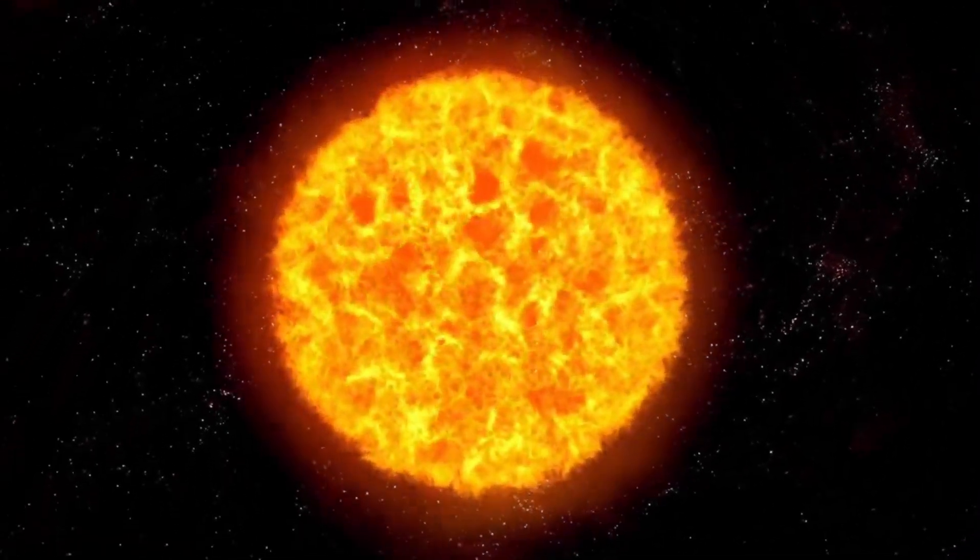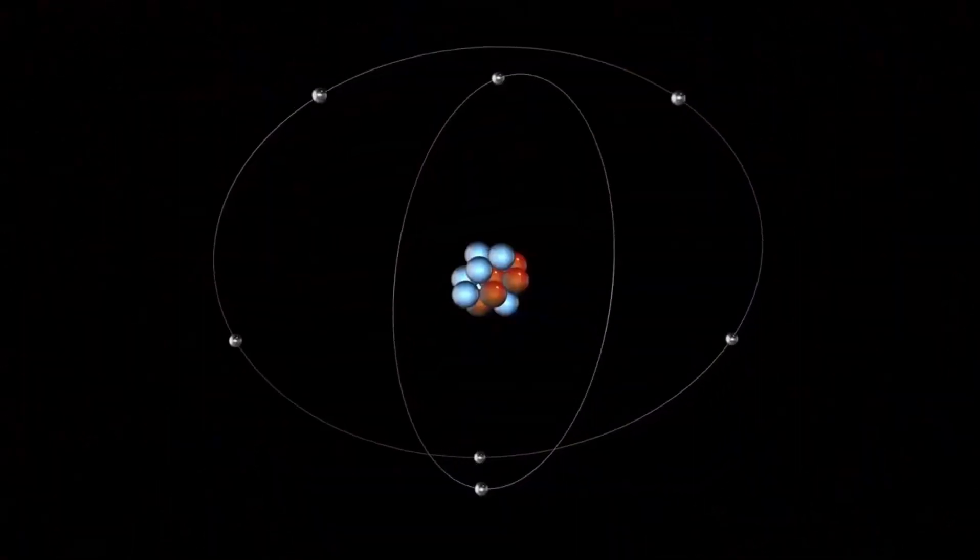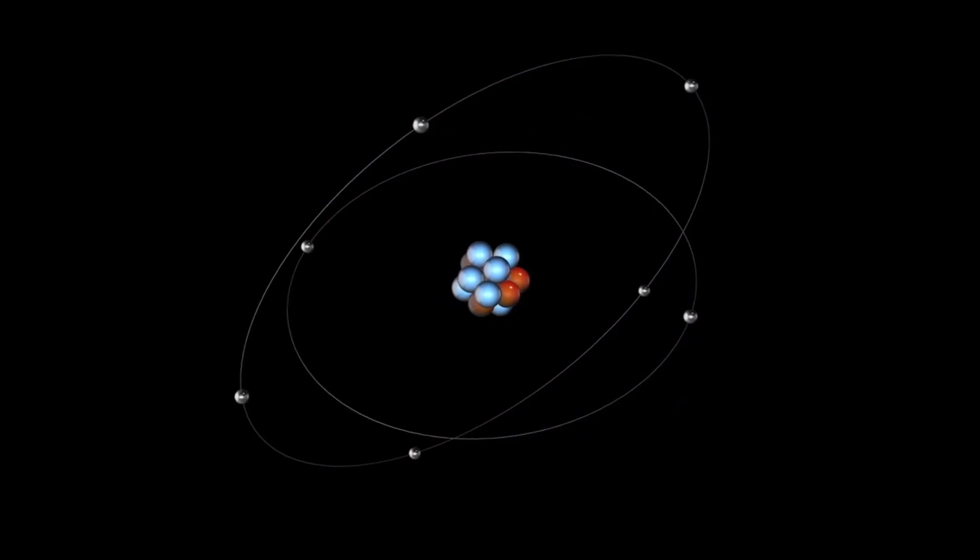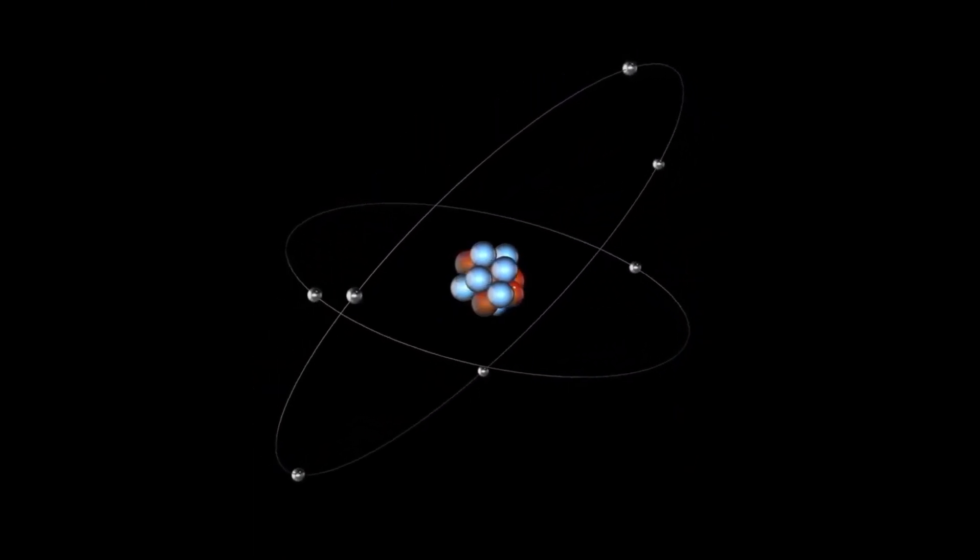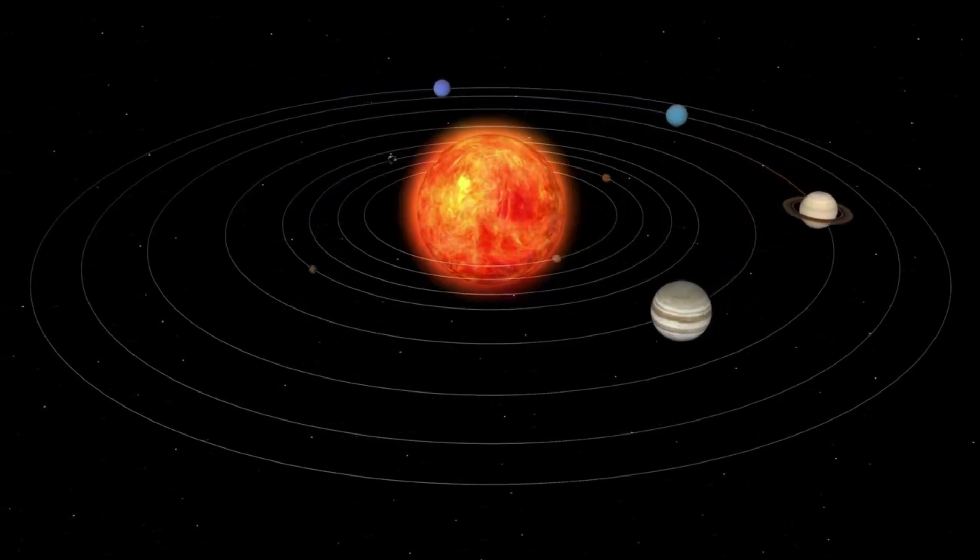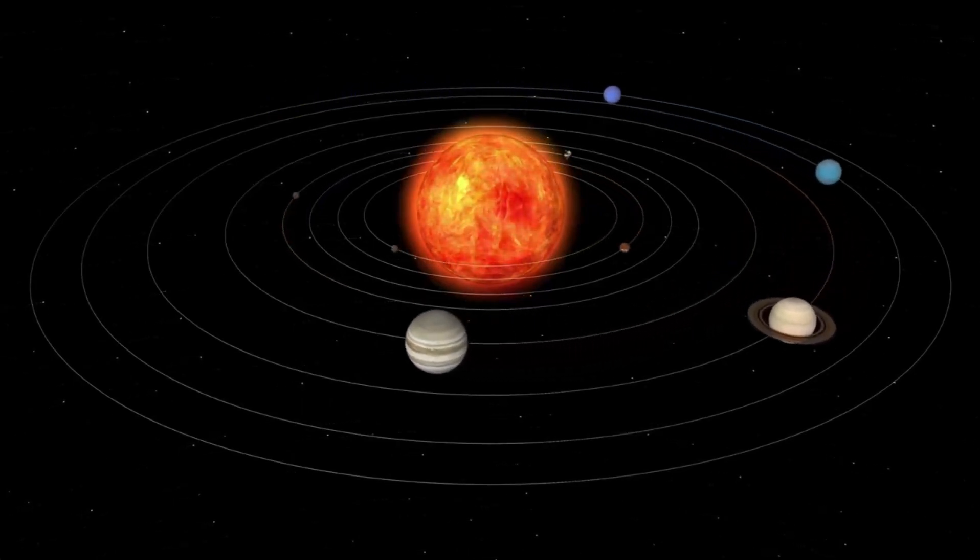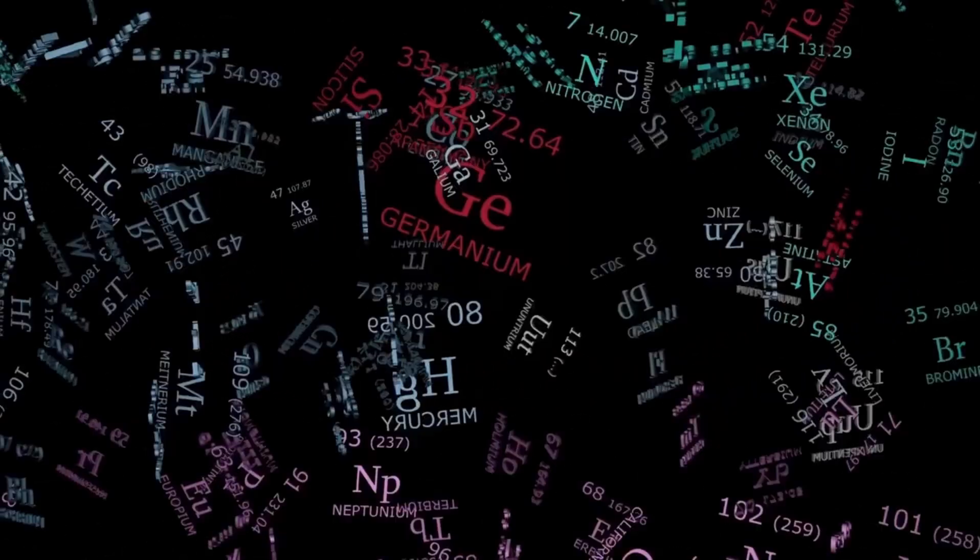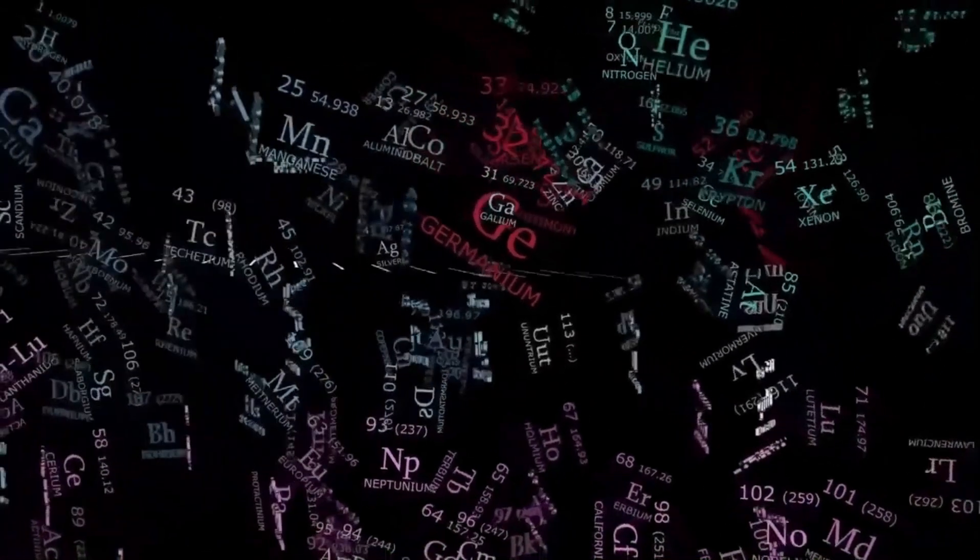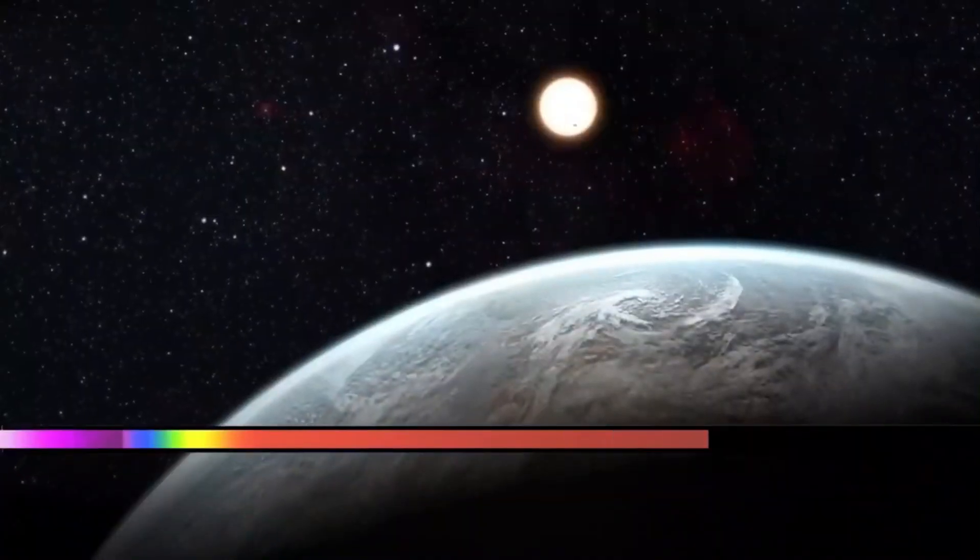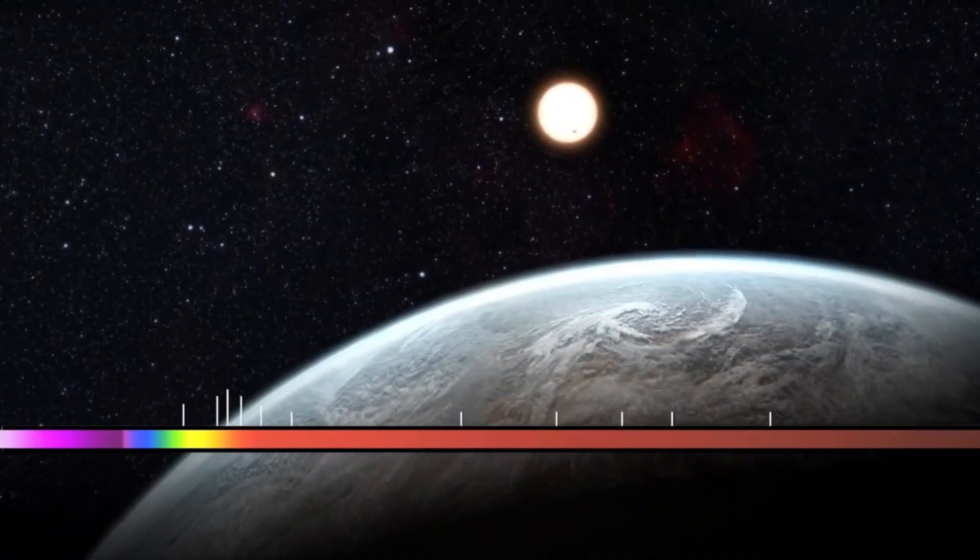Exobiology, the study of life beyond Earth, needs to shift its perspective to include planets that don't necessarily fit the Earth-like mold but may offer better conditions for life. A broader understanding of habitability is needed, one that takes into account biological factors, rather than focusing solely on how closely a planet mirrors Earth's conditions. By widening our scope, we may uncover planets that provide even more favorable environments for life, allowing for new types of ecosystems and life forms to flourish.